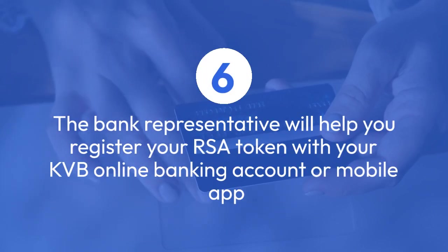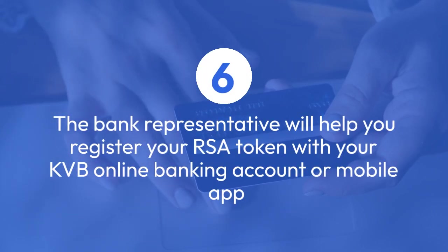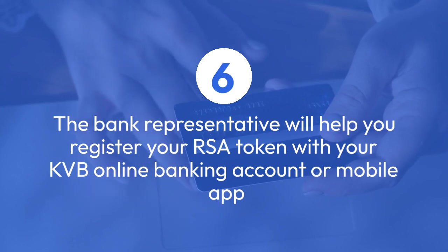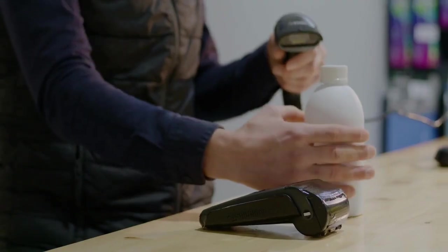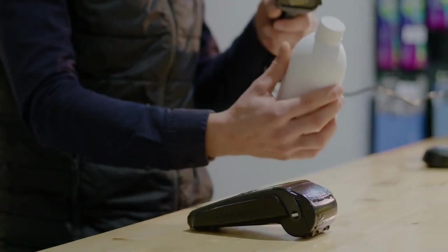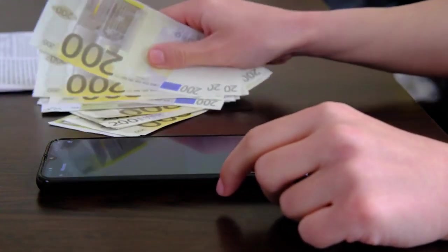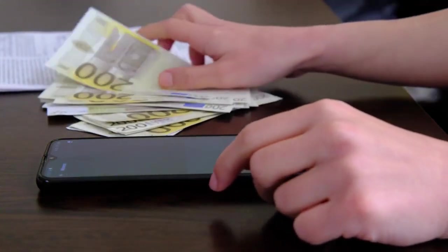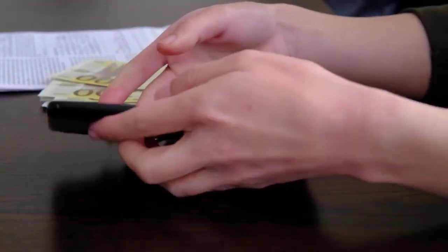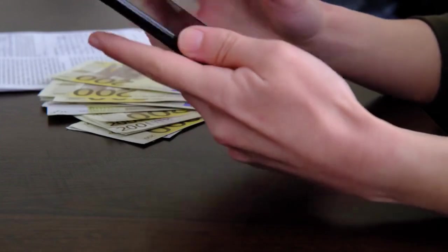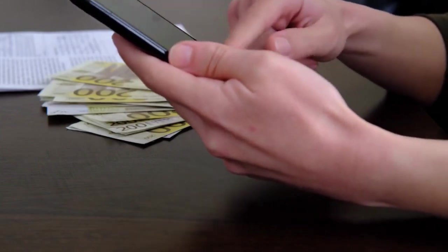Now the most crucial step: the bank representative will help you register your RSA token with your KVB online banking account or mobile app. They will guide you through the pairing process, which might involve entering specific codes displayed on the RSA token and confirming the details on your banking platform.